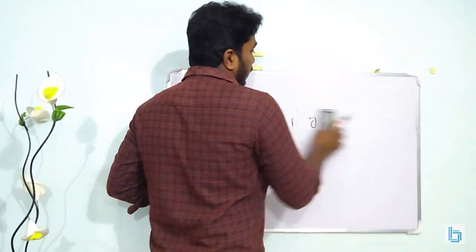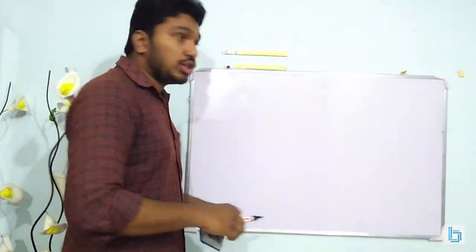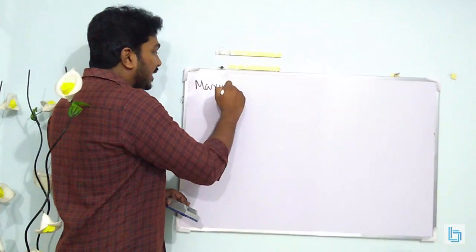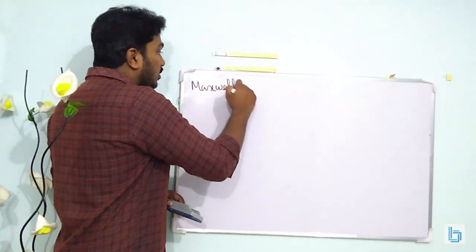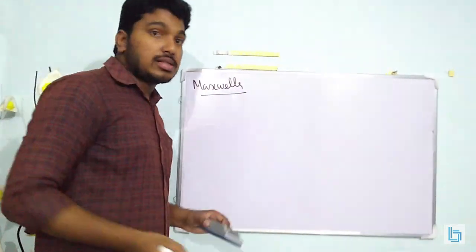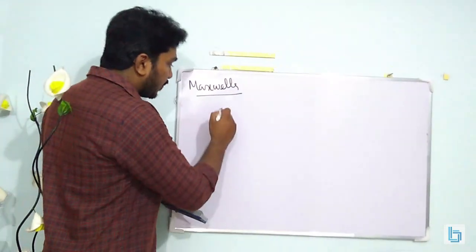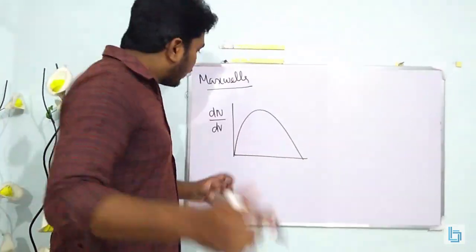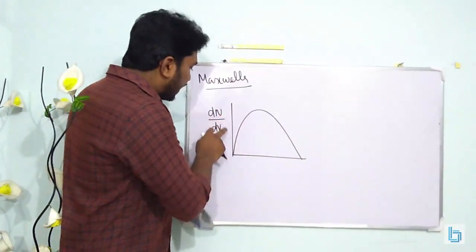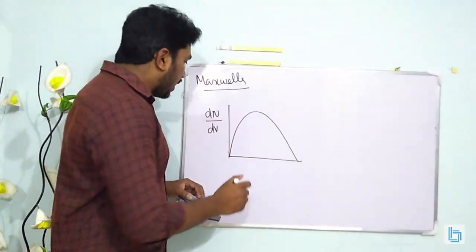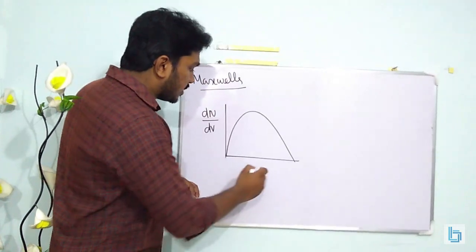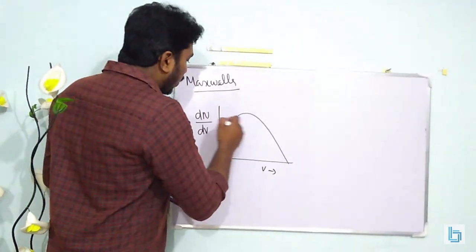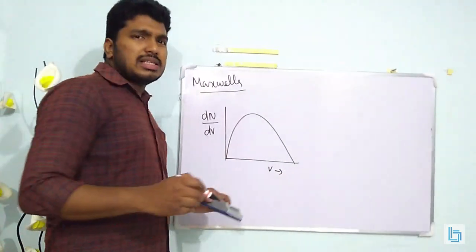Maxwell's distribution gives us an idea about the number of molecules possessing a certain velocity. On the y-axis is dN/dV (the number of molecules at a particular velocity), and on the x-axis are the velocities.